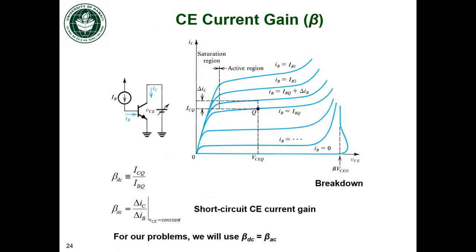Let's also look at the current gain parameter, beta, the common emitter current gain parameter. This is the collector current as a function of the collector to emitter voltage for different base currents. We can take a DC value of beta, beta sub-DC, and that is looking at the DC collector current at some point divided by the DC value of the base current.